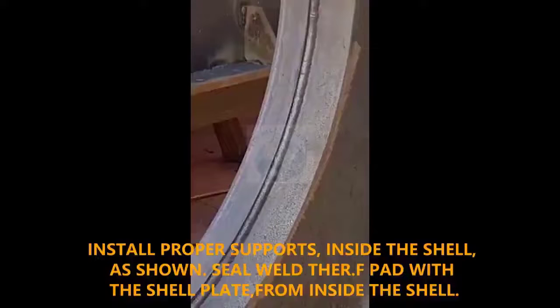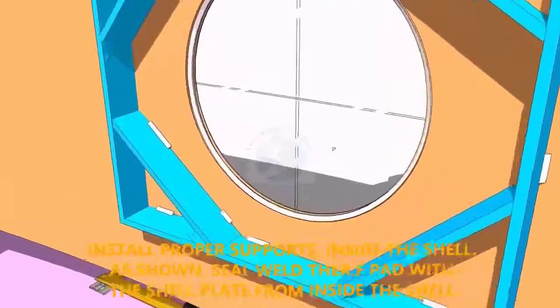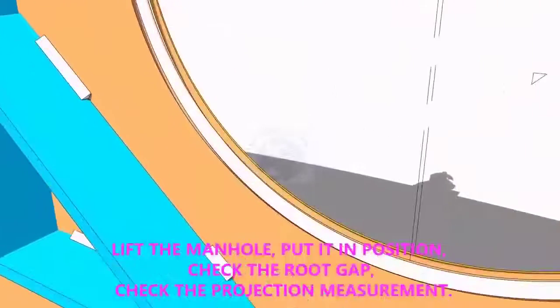Provide proper supports to control the distortion during welding. Weld a run on the joint between the shell plate and the pad plate.